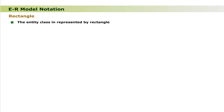Let us now discuss the symbols used to develop the ER model. The entity class is represented by a rectangle. The name of the entity class is written inside. For example, the entity class Student is represented as shown.